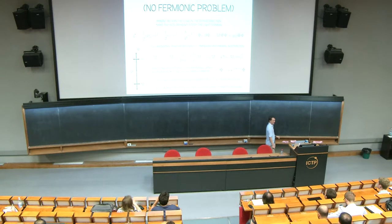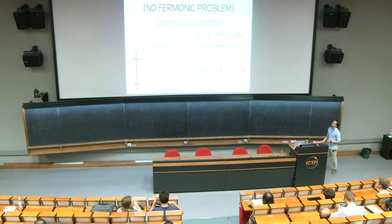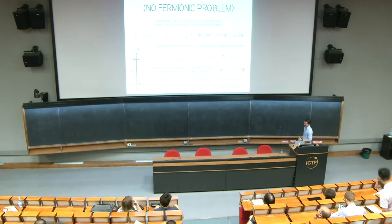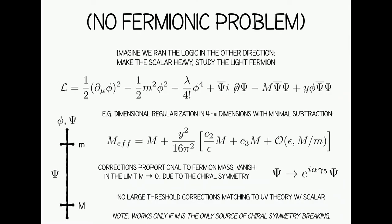Thank you all for coming back to be tortured for another 90 minutes. We left off with the notion that there is a weak version of the hierarchy problem that has nothing to do with divergences — it has to do with physical mass thresholds we could see for scalars, because in the example we wrote down there was no manifest symmetry of the scalar when we took its mass to zero, and the same problem didn't exist for the fermion because it was protected by chiral symmetry.